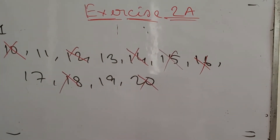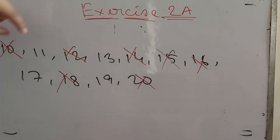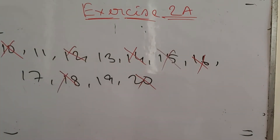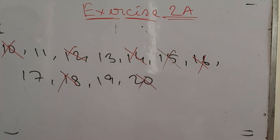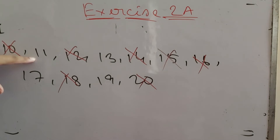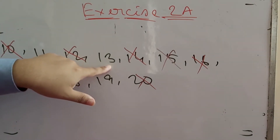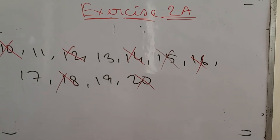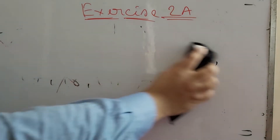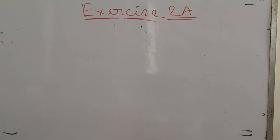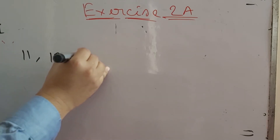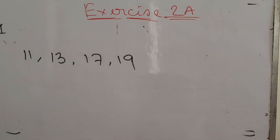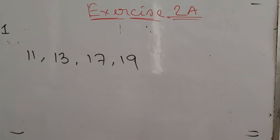Now there are only 4 numbers left: 11, 13, 17, and 19. If you find the factors of each individual number, you will get only two factors. The factors of 11 are 1 and 11; the factors of 13 are 1 and 13; the factors of 19 are 1 and 19. So the prime numbers between 10 and 20 are 11, 13, 17, and 19. There are only 4 prime numbers between 10 and 20.